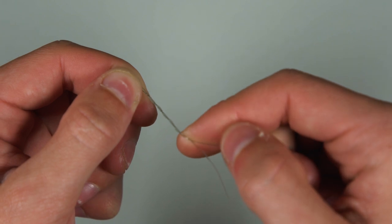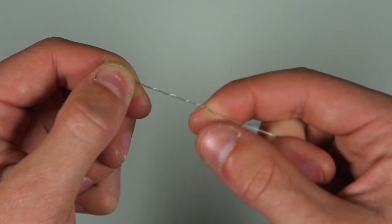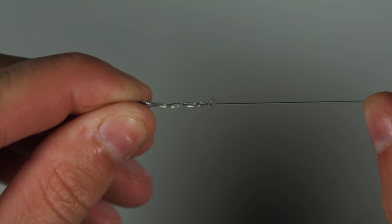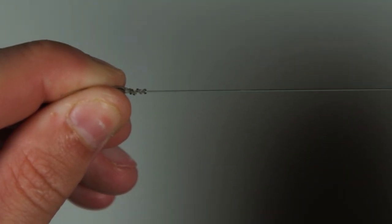We like to use a simple half blood knot, passing the line through the eye of the swivel before wrapping the line around itself around 7 times and threading it back through the hole you created.